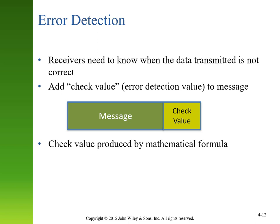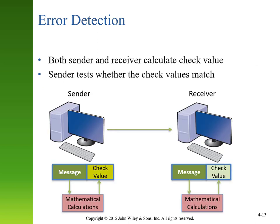After trying to prevent errors, the next focus is detecting them, because errors will still happen. One way we do this on computer networks is adding a check value to the message. The check value uses a mathematical formula to verify whether the message is intact. Ideally, the check value is small relative to the message size so we don't use too much bandwidth on it. The sender sends a message with a check value, and the receiver performs a mathematical calculation to determine whether it was received correctly.